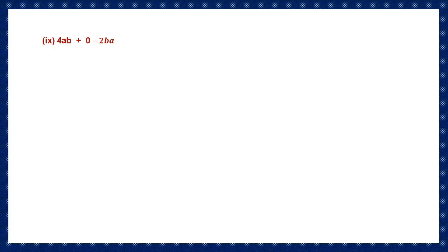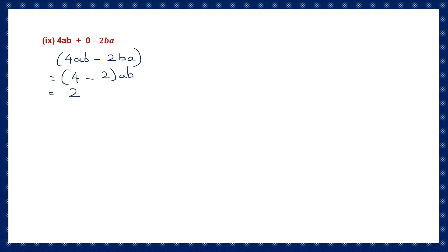Question 9: 4AB plus 0 minus 2BA. These are like terms — there's 1A and 1B in both, so we can leave out the 0. Taking only the numbers: 4 minus 2 AB. 4 minus 2 is 2, so the answer is 2AB.